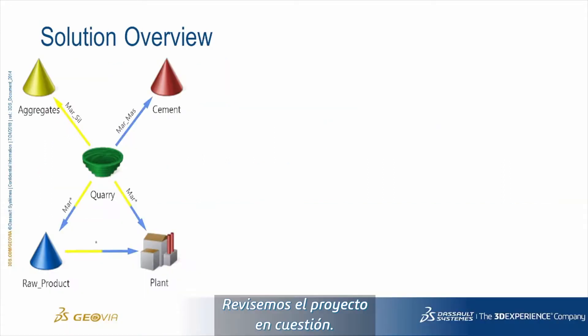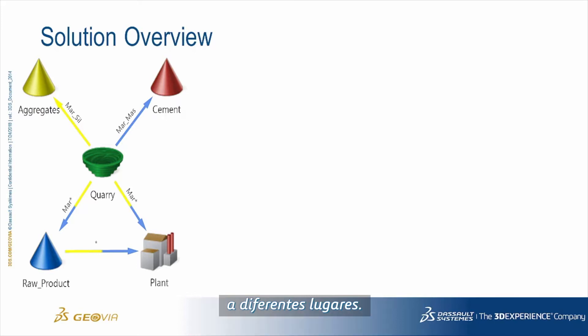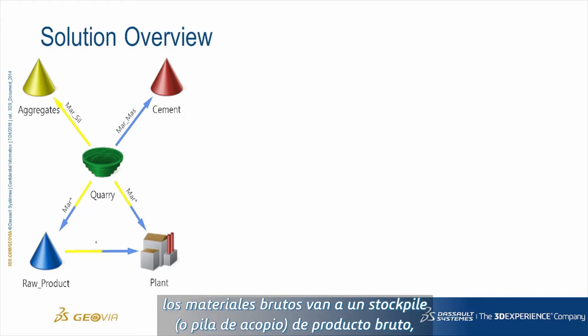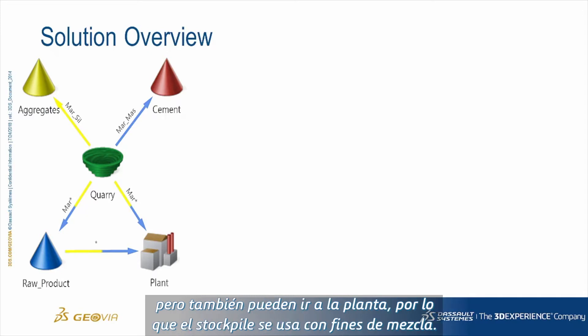Let's have a look at the project in question. It's quite simple — a single quarry sending a couple of different materials to a few different places. The most important part is that raw material goes to a raw product stockpile but can also go directly to a plant, so the stockpile is used for blending purposes.